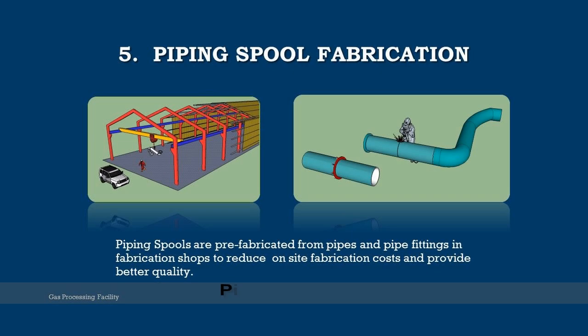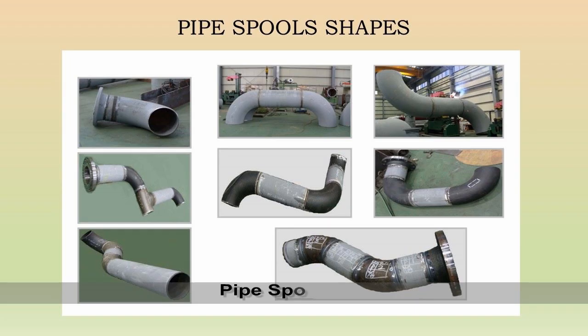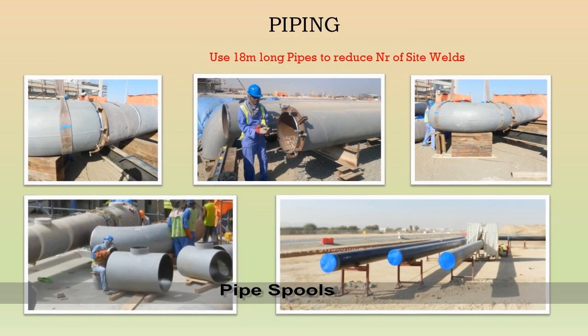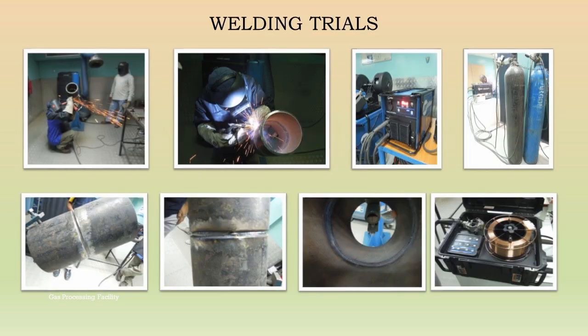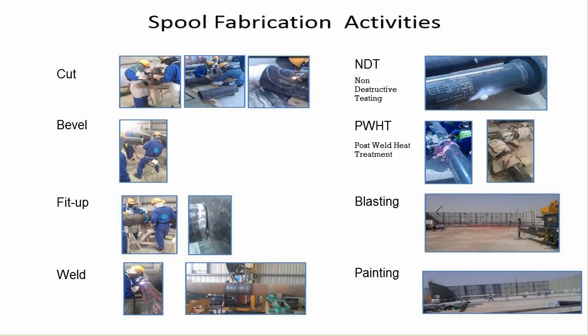Pre-fabrication of pipes — pipe spools. Pipe spools are fabricated from pipes and pipe fittings: elbows, flanges, tees, etc., in the fabrication shop.